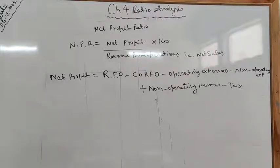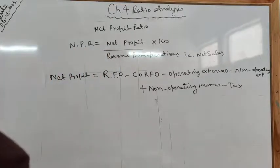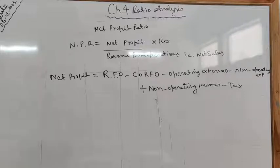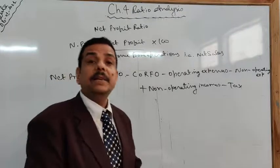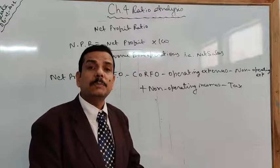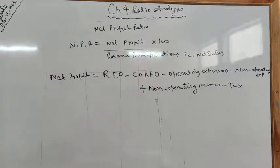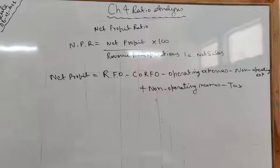The objective and significance of this ratio: it is an indicator of the overall efficiency of the business. A higher net profit ratio means better financial position — it always indicates good financial health of the enterprise. This ratio helps determine operational efficiency. For example, during the pandemic, Jio Network collected record revenue of ₹10,000 crore and attracted investment from Saudi Aramco into Reliance Jio. An increase in the ratio over the previous period shows improvement in operational efficiency; a decline indicates otherwise. Comparison with industry standards is also useful.